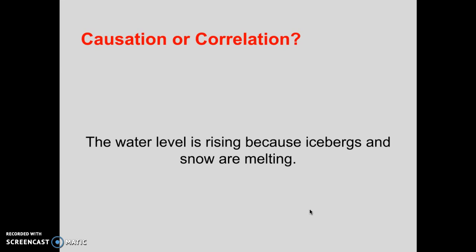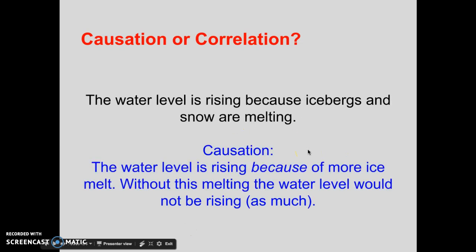The water level is rising because icebergs and snow are melting — correlation or causation? It's that big fat 'because' right there which makes it causation. The water level is rising because of more ice melt. Without this melting, the water level would not be rising as much.